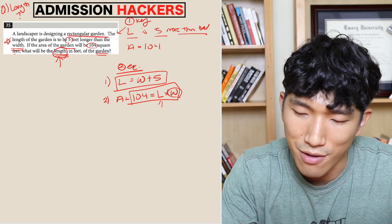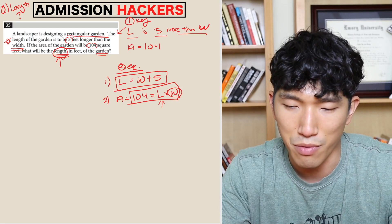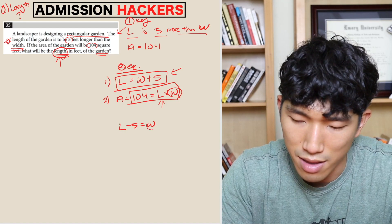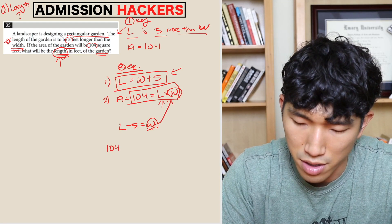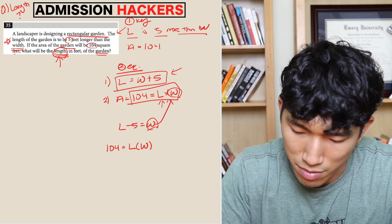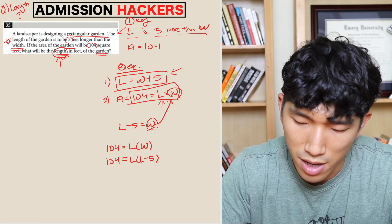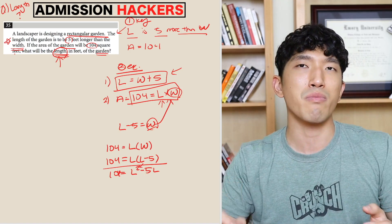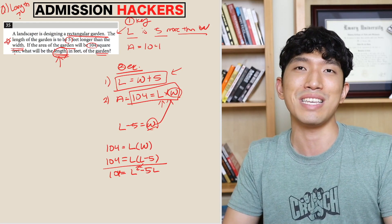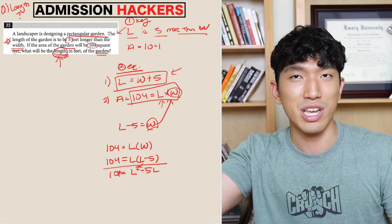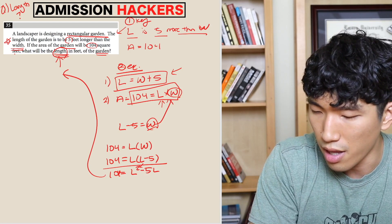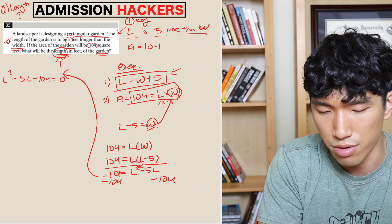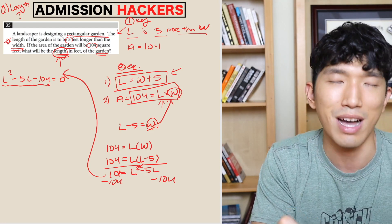We're looking for L, so we try to eliminate W using substitution. Rearranging equation one: L − 5 = W. Substituting into the area equation: 104 = L × (L − 5), which gives L² − 5L = 104. Moving everything to one side: L² − 5L − 104 = 0. We see a squared term, so this involves quadratics — and for quadratics you set the equation equal to zero.